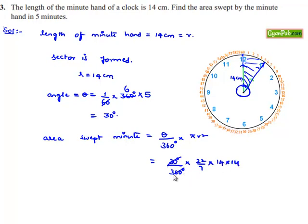30 goes into 360 twelve times, 7 goes into 14 two times, and simplifying further, we get 11 × 14, which is 154 divided by 3 cm².